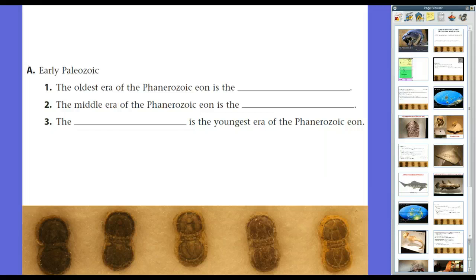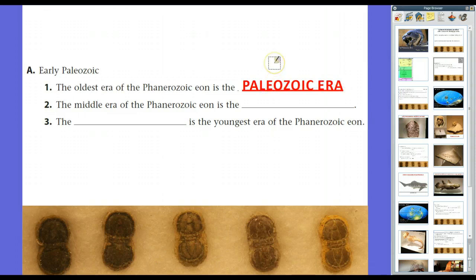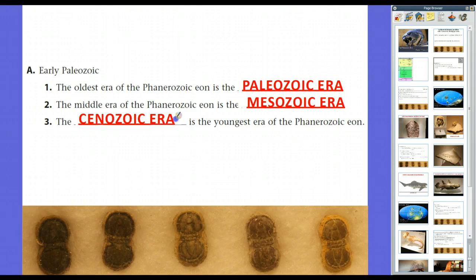Now, the oldest era of the Phanerozoic Eon is the Paleozoic Era, which we're going to be talking about today. After that, the middle era — the Era of Dinosaurs — is the Mesozoic Era. And the youngest era is what we call the Cenozoic Era, which is the era that we live in. We'll get through these as we go through the chapter.